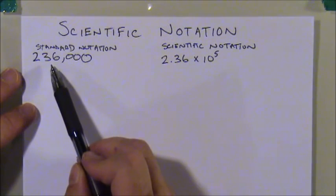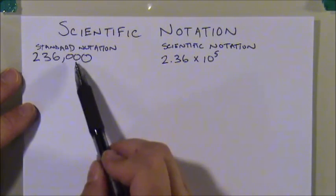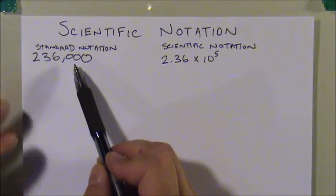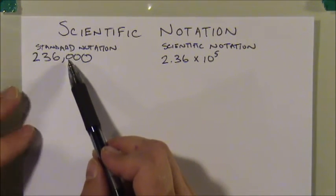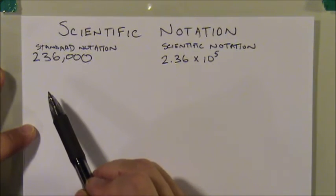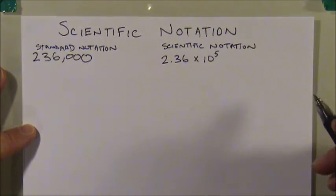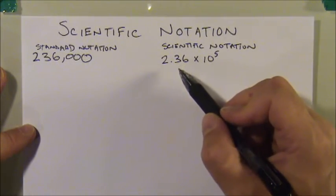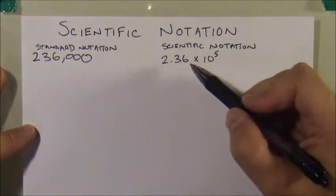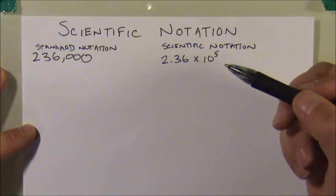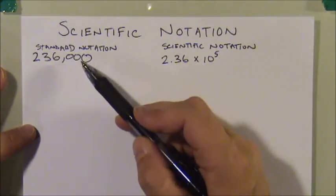The digits 2, 3, and 6 are the only significant digits in 236,000 — those trailing zeros are not considered significant figures. It's ambiguous whether they count or whether they're just placeholders to show where the 2, 3, and 6 belong. Writing the number in scientific notation removes that ambiguity. Note that a zero after the decimal point would be significant, whereas trailing zeros before the decimal are ambiguous.